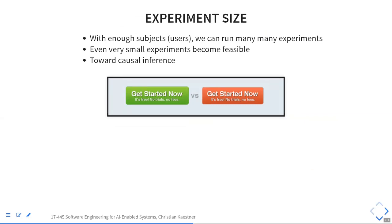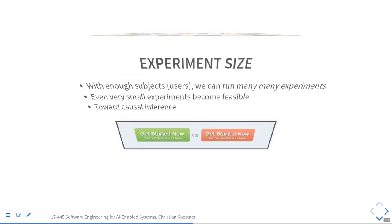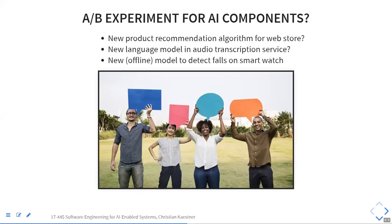People have been pushing this very far. You hear stories where Facebook experiments with the size or color of a button — really small changes, just the background color changes. If you have enough users, you might actually find the difference between those changes. With enough users, you can test many small changes and make adjustments accordingly.